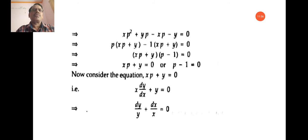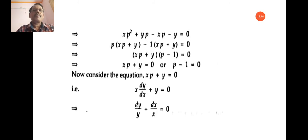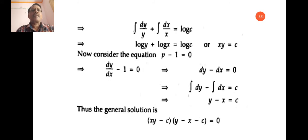Consider xp + y = 0, i.e., x(dy/dx) + y = 0. This is a variable separable equation. Separating variables: dy/y + dx/x = 0. On integrating: log y + log x = log c, so by logarithm properties, xy = c, i.e., xy − c = 0. This is the first solution.